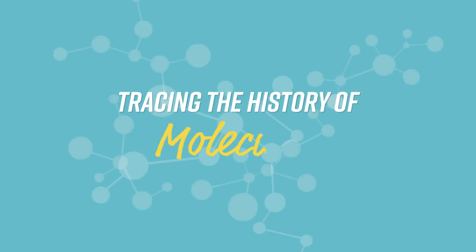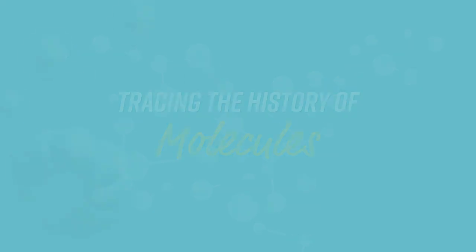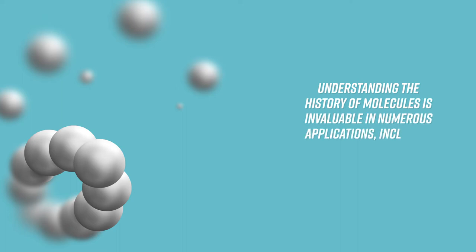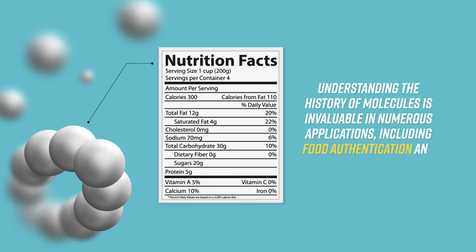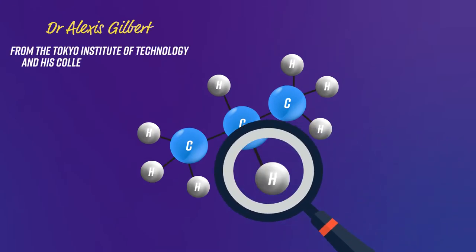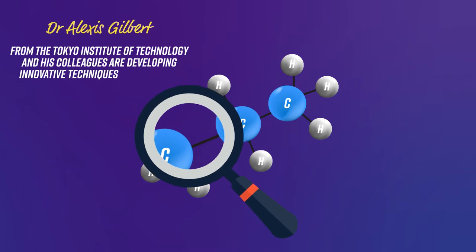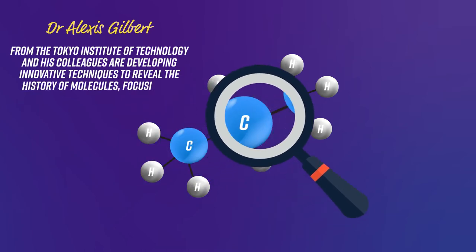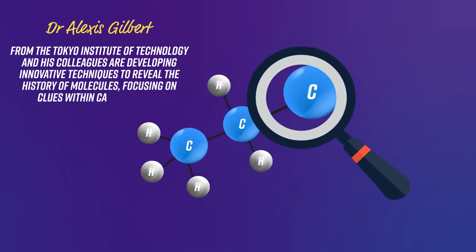Tracing the history of molecules is invaluable in numerous applications, including food authentication and natural gas extraction. Dr. Alexis Gilbert from the Tokyo Institute of Technology and his colleagues are developing innovative techniques to reveal the history of molecules, focusing on clues within carbon atoms.